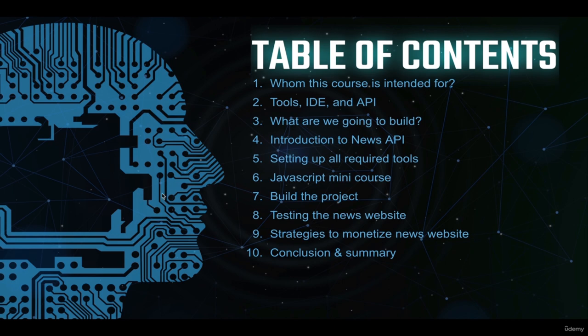Chapter seven is the main part of the course — we're going to build our news website. We'll move from the presentation slides to Visual Studio Code and start coding our project. Chapter eight is testing: as soon as we're done building the website, we're going to test it to make sure it works and that it's easy to use and user-friendly from the standpoint of the user.